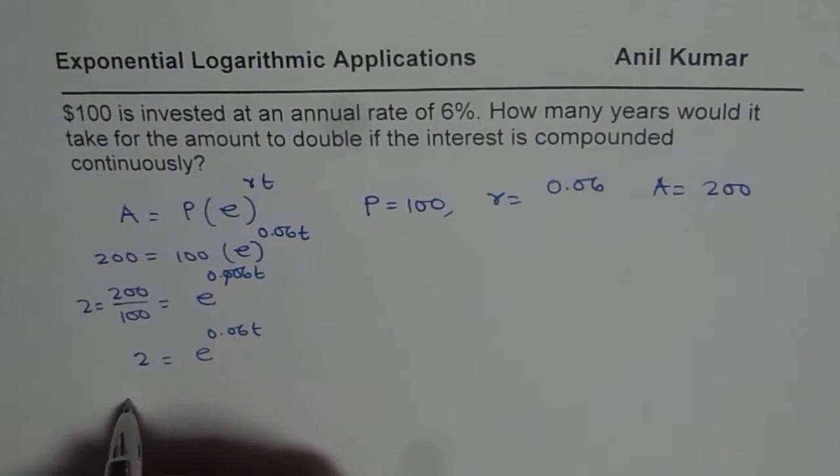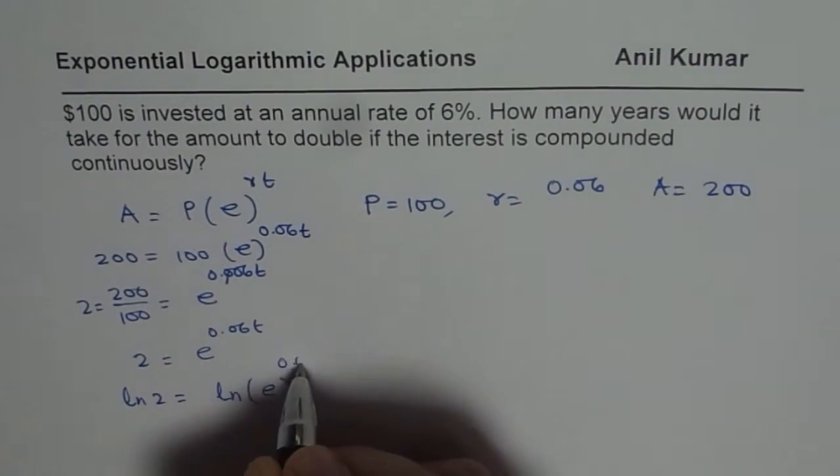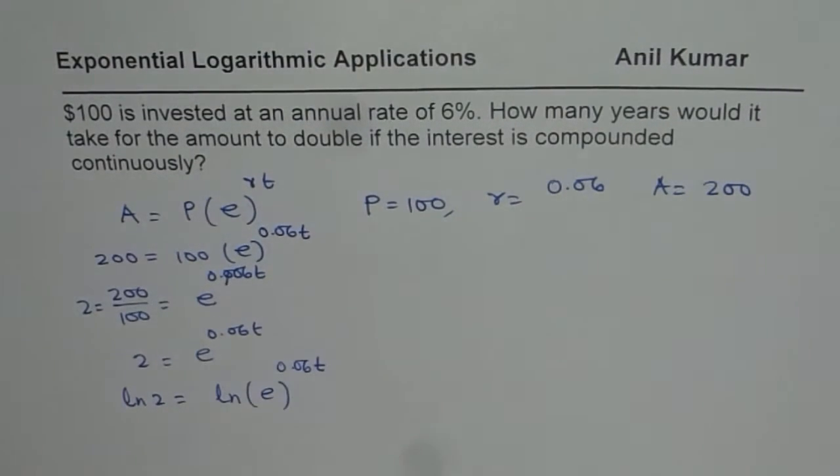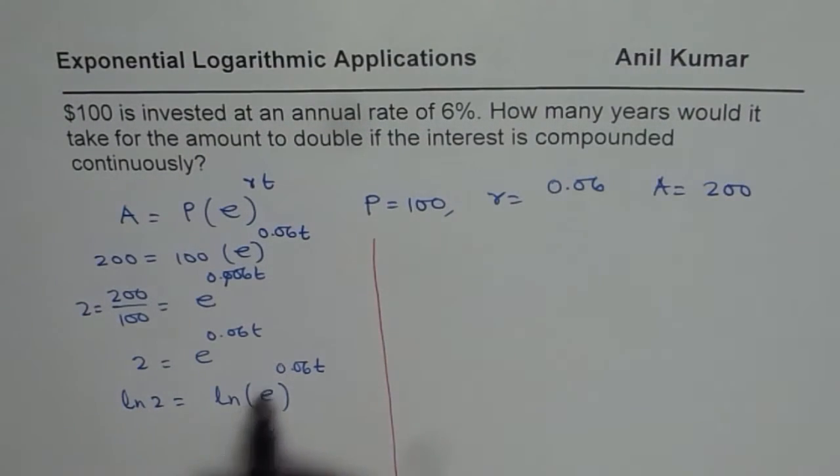So that is ln. So we will do ln 2 equals to ln e to the power of 0.06t. So we will now apply the properties of logarithms to solve this.